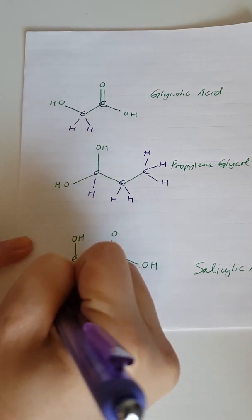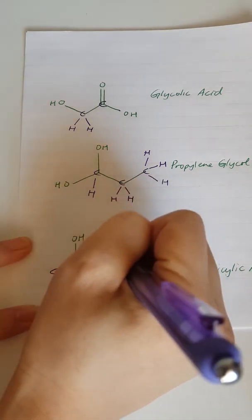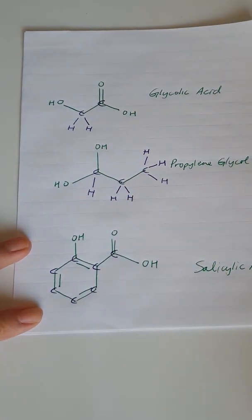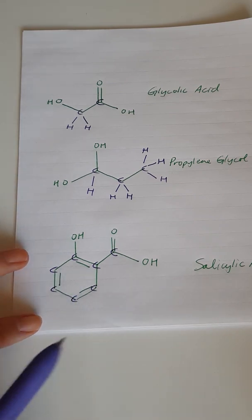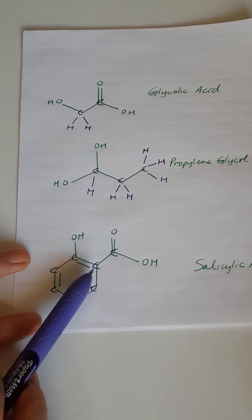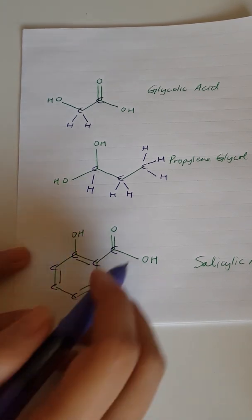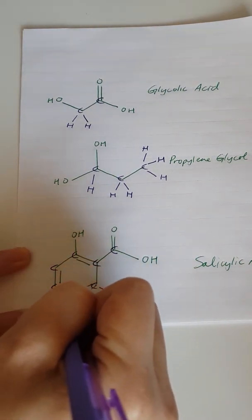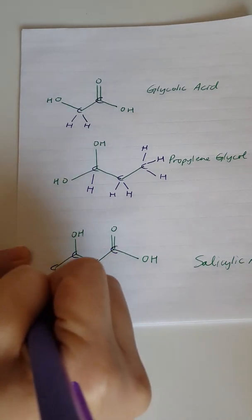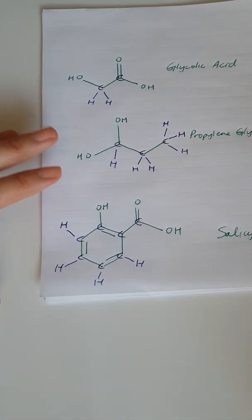We have six carbons in the benzene ring and then we have one more here. Now we can look at them and see which ones need extra bonds. Starting on the right, we've got four bonds to this carbon; this one has four lines already; we have three on this so we need one extra hydrogen; we have three on this as well; three on this one; and three on this one — and so that makes all the carbons happy with their four bonds.